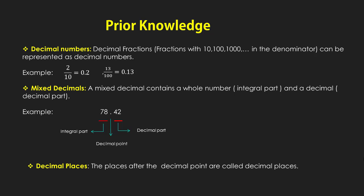Decimal places: the places after the decimal point are called decimal places. For example, 42.3 has one decimal place because it has one number — three — after the decimal point. The number 118.61 has two decimal places because it has two numbers after the decimal point.